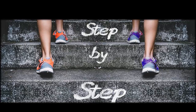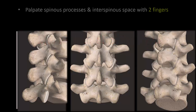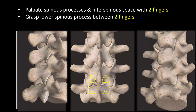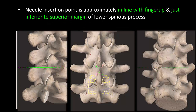Success with the paraspinous approach is greatly increased if you have a good mental model of the anatomy of the spine. Start by palpating the spinous processes with two fingers, rolling over the summit — the tip — into the valley of the interspinous space and back again. The feel of this is very similar to rolling two fingers over the knuckles of your other hand. Grasp or straddle the lower spinous process with the two fingers, and mark or note the superior margin and its lateral border. The needle insertion point is just inferior and lateral to the superior margin of the lower spinous process, roughly in line with your fingertip if your fingers are straddling the spinous process.